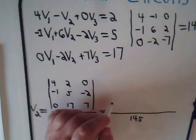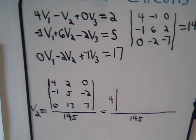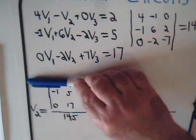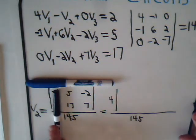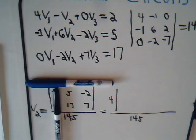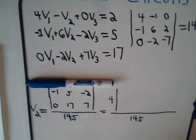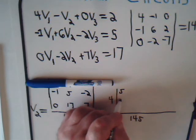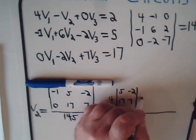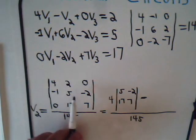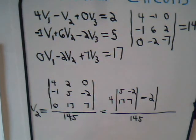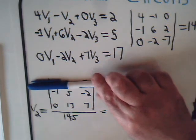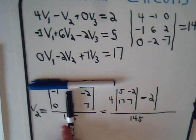So here we have four times this two by two determinant. Again, cover up the row and cover up the column and we have 5, 17, negative 2, 7. Then it's minus the next number up here, which is 2, times this two by two determinant. Cover up the row and cover up the column and it's negative 1, 0, negative 2, 7.